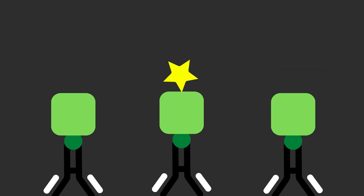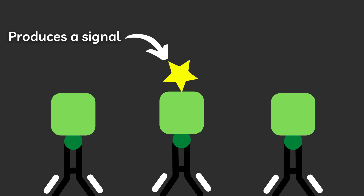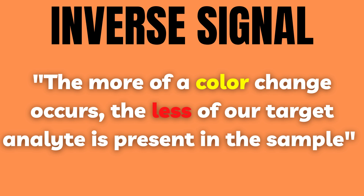The essential idea is still the same, since the antigens have to compete for binding spots, and as such the signal will also be inverse, meaning that the more signal we observe, the less of the target analyte was present in the original sample.